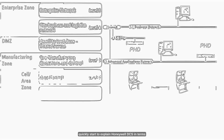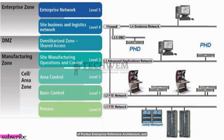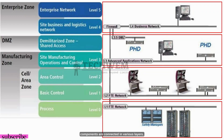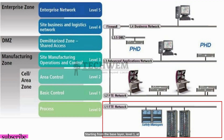I will quickly start to explain Honeywell DCS in terms of Purdue Enterprise Reference Architecture, and then we will go to the Control System Architecture. In the Control and Automation field, different components are connected in various layers. Starting from the base layer, Level 1, we normally connect devices, PLCs, DCS controllers, fieldbus devices, and all those things are connected at this level.